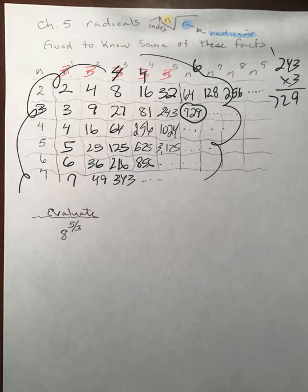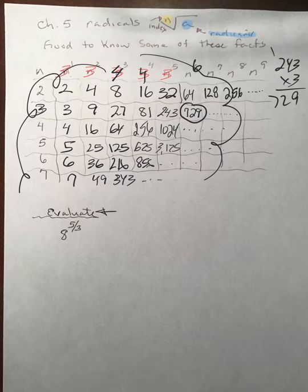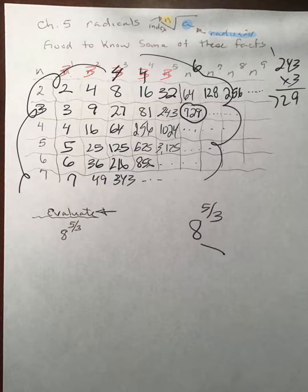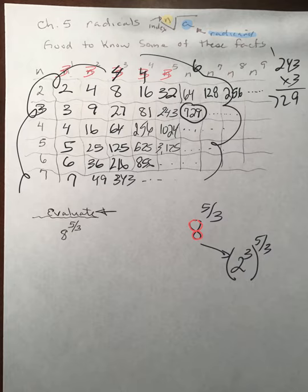This isn't actually the lesson yet for today, but I wanted to emphasize — evaluate this particular type of problem: 8 raised to the 5/3 power. Some of you have been doing it a different way, and it's not wrong. Some of you have been replacing 8 as 2 to the third power, because those are equivalent, and then using rules of exponents — power to a power you multiply — and you end up with 2 to the fifth power, which is just 32. That is correct; however, this is for another unit.